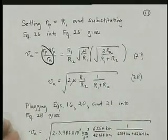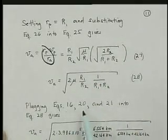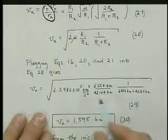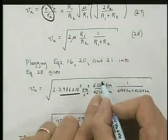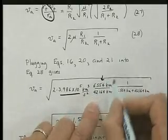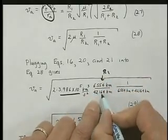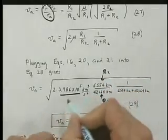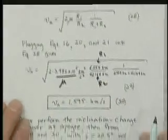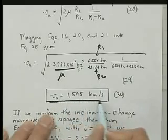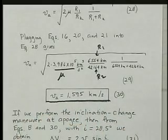Then plugging in equations 16, 20, and 21, basically the numbers for mu and R1, R2, and mu of the Earth, we get for our solution the velocity at apogee is 1.595 kilometers per second.